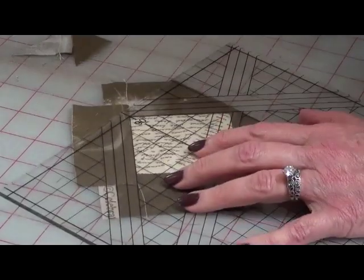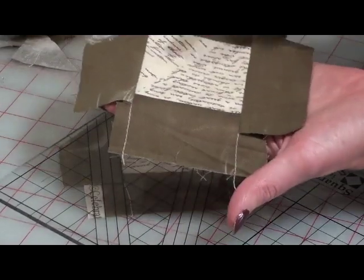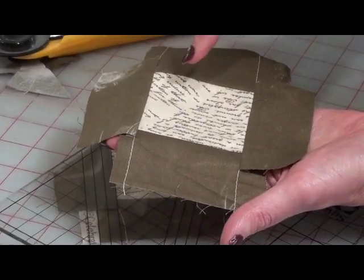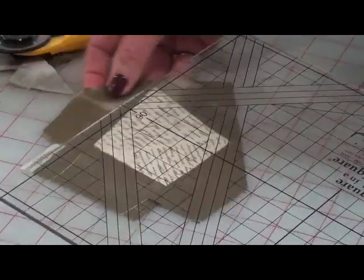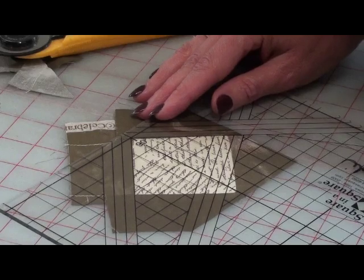Now remember, every triangle unit starts out exactly like this, and what we mean by that is that you'll have a square in the middle with strips on the side, and that's the basic unit. And from the basic unit, you can trim it into any triangle unit that you're needing.